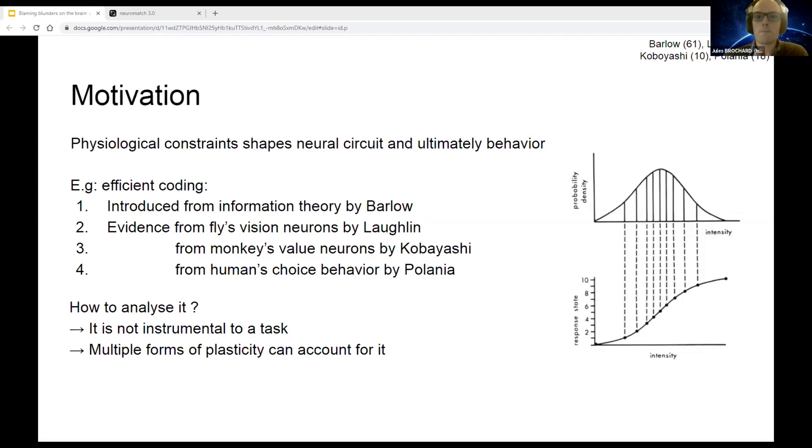There are several biological scenarios behind them, several ways to implement plasticity to account for efficient coding. So in this work, I'm trying to characterize such biological constraints and how they affect neural decision process.